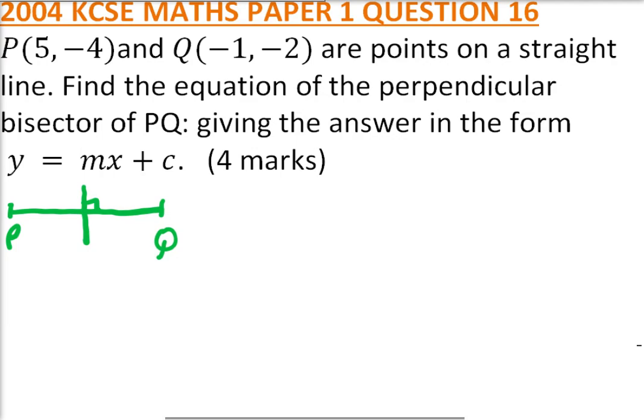So we need to get the gradient of PQ using the points. We say the gradient of PQ equals (-2 - (-4)) divided by (-1 - 5). This gives us (-2 + 4) which is 2, divided by -6. So the gradient is -1/3.